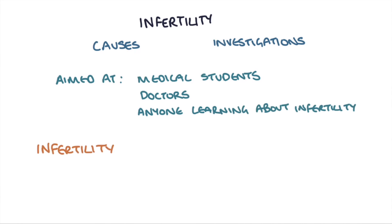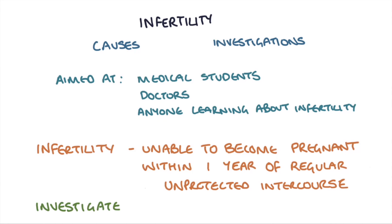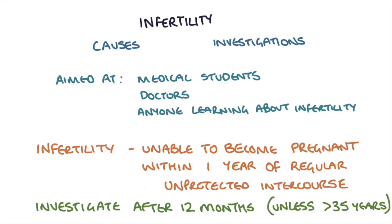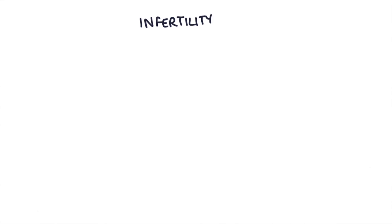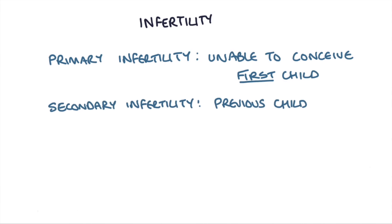Infertility is defined as being unable to become pregnant within one year of regular unprotected intercourse. We would only start investigating a couple if they fail to become pregnant after 12 months, unless the woman is over 35, in which case it's worth starting early. It can be defined as primary infertility — when a patient has been unable to conceive their first child — or secondary, when they've previously had a child and are struggling with their second or third.